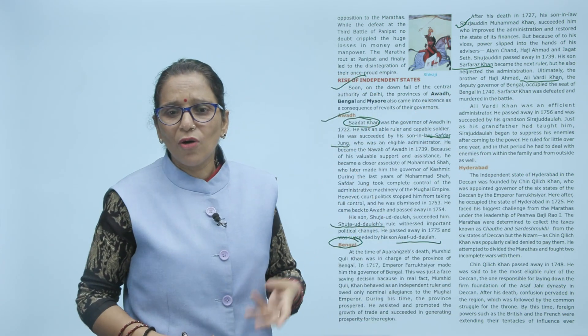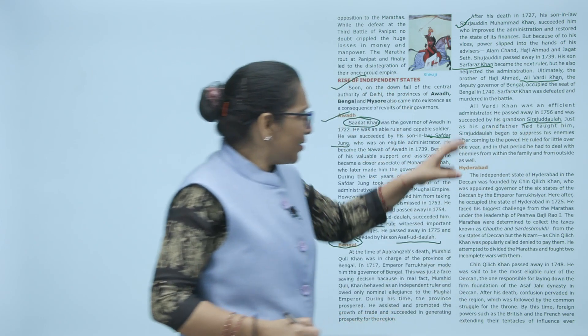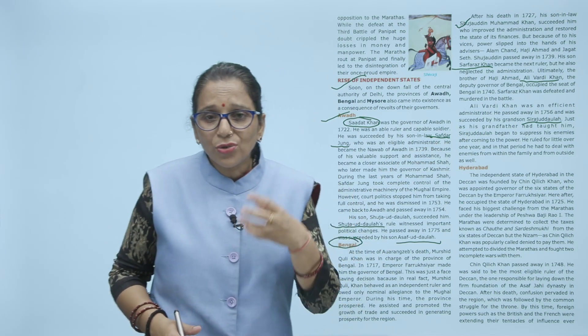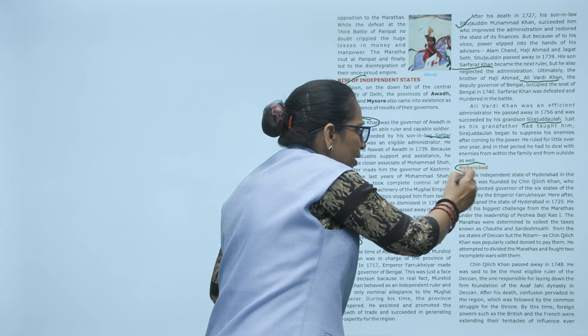His son Sarfaraz Khan became the next ruler of Bengal. Ab kya hua — Sarfaraz Khan ne administration pe itna dhyan nahi diya, and ultimately Ali Vardi Khan — brother of Haji Ahmed — became the deputy governor of Bengal and occupied the seat of Bengal in 1740. Sarfaraz Khan was defeated and even murdered in the battle. Ali Vardi Khan was a very able administrator but passed away in 1756, and was succeeded by his grandson Siraj-ud-Daula. Siraj-ud-Daula begin to suppress his enemies, and he ruled for a little over one year, dealing with enemies from within the family and from outside as well.